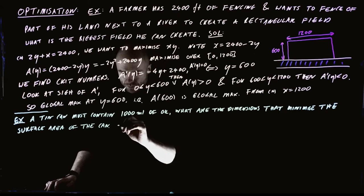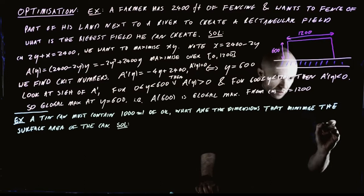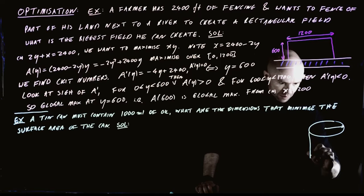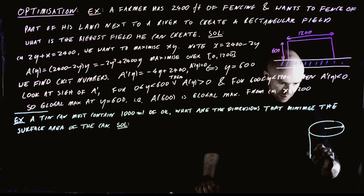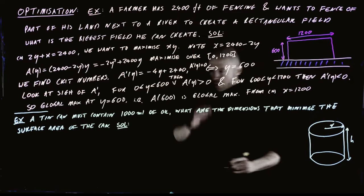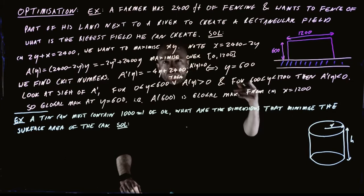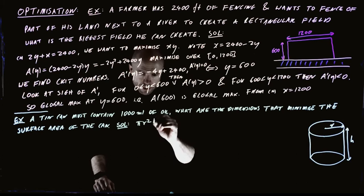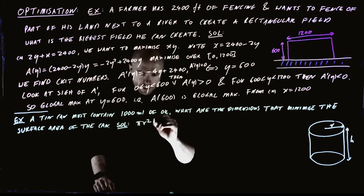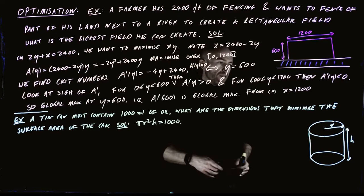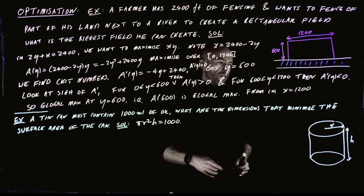We start by drawing a tin can. The dimensions that define it are the radius r and the height h. The constraint is that the volume must equal 1,000 milliliters, so pi r squared times h equals 1,000.